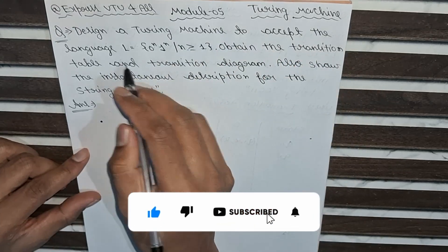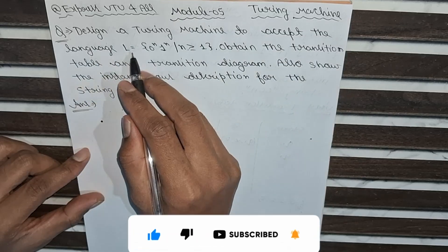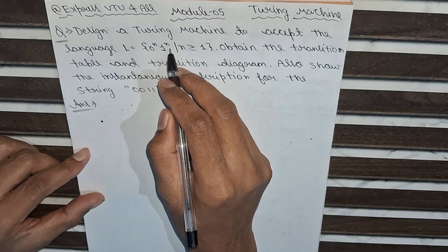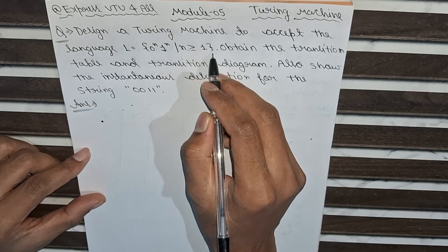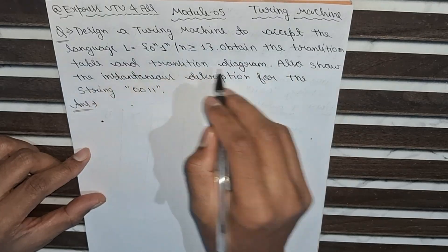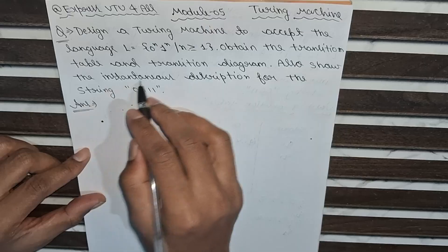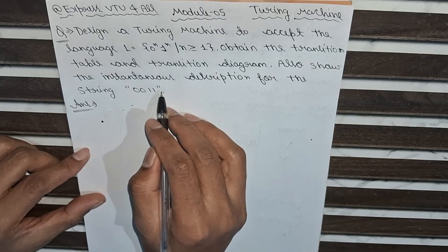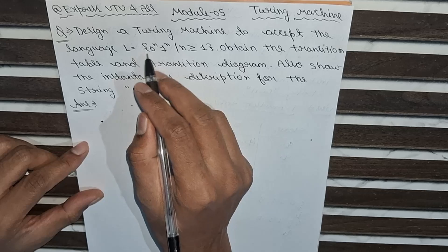The question is: design a Turing machine to accept the language L = {0^n 1^n | n ≥ 1}. We have to obtain the transition table, transition diagram, and also show the instantaneous description for the string 0011.